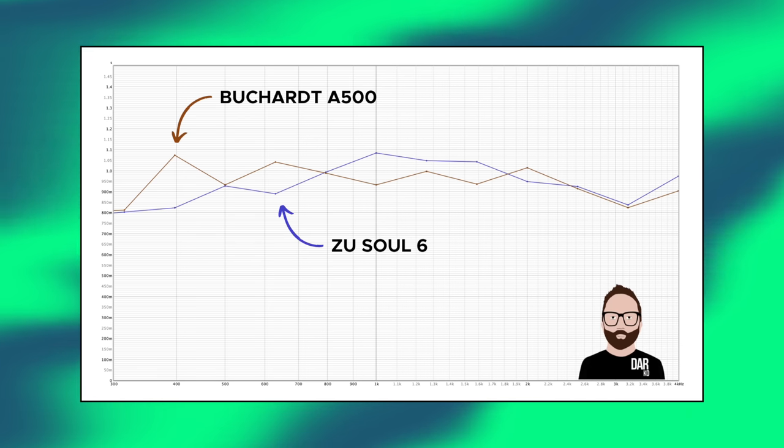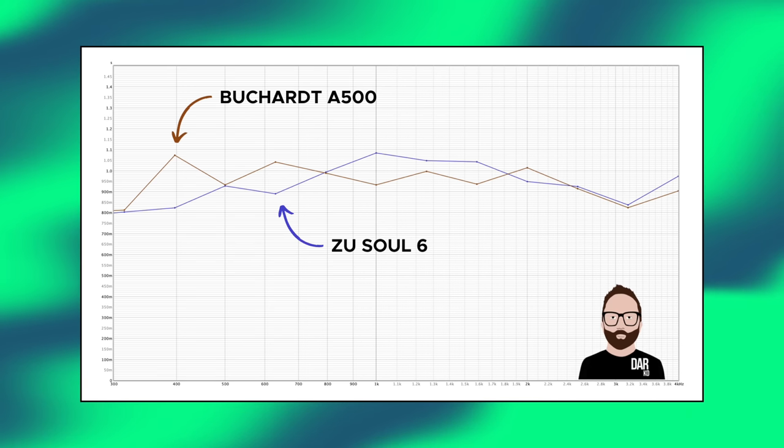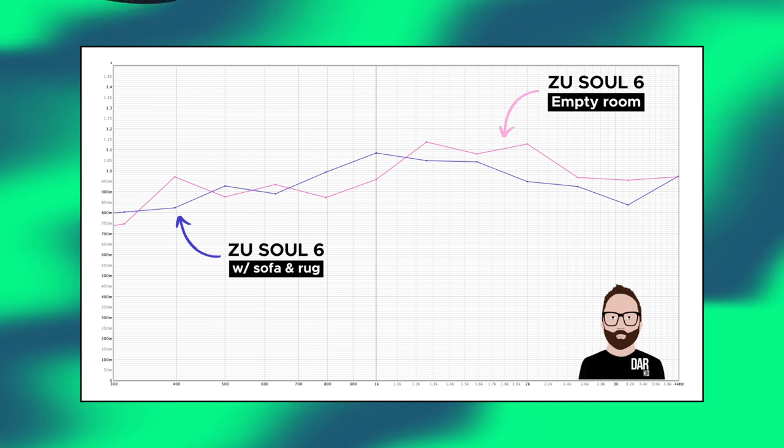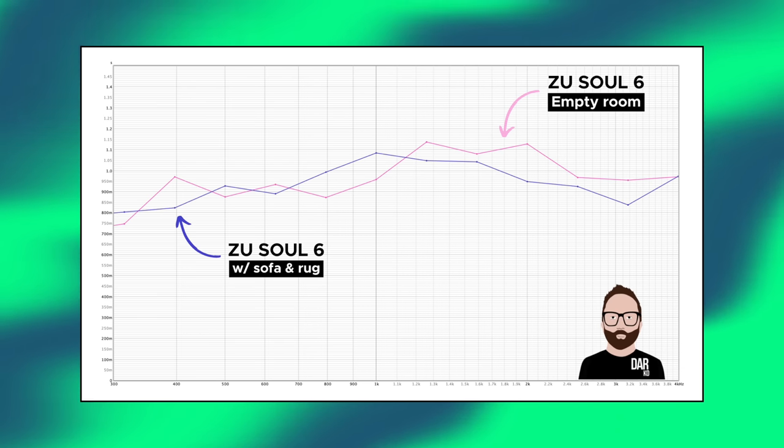Downstairs in my lounge listening room, the RT-60 reverb time is even worse — at least a second, and at a couple of points it's 1.1 seconds. In the last video we saw that sofas and rugs don't really do very much to improve that reverb time. So what I wanted to investigate was: could room correction software do something about the reverb time?